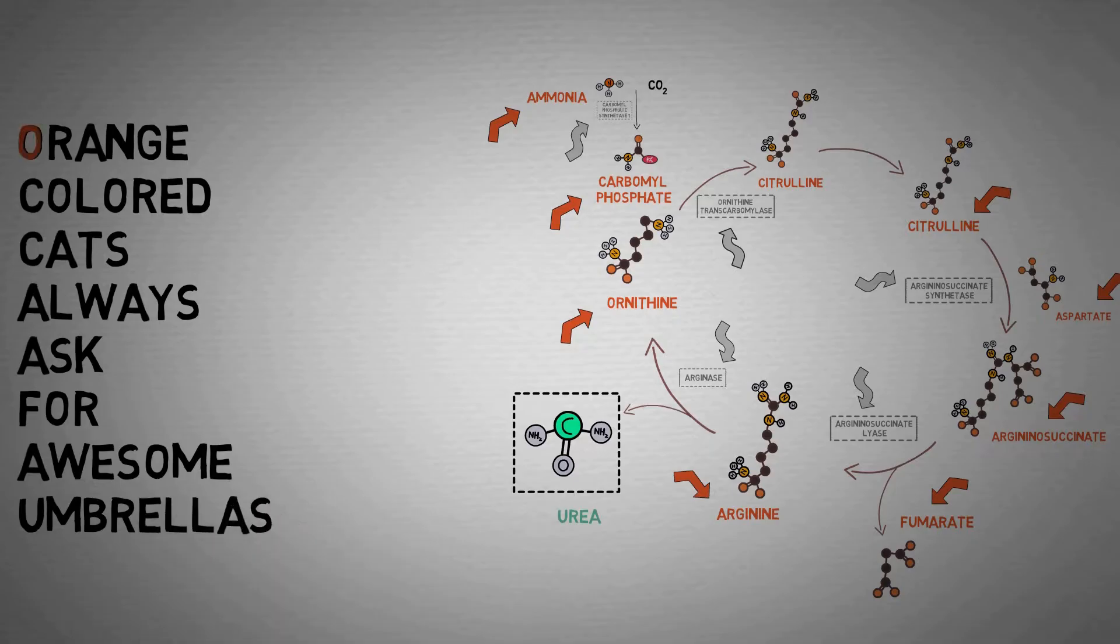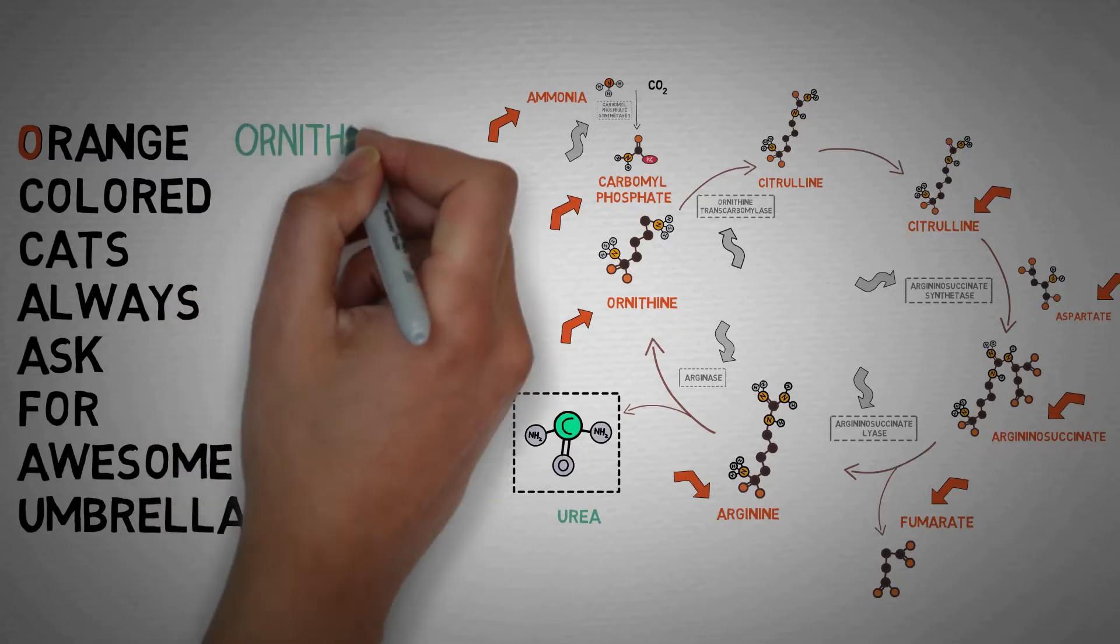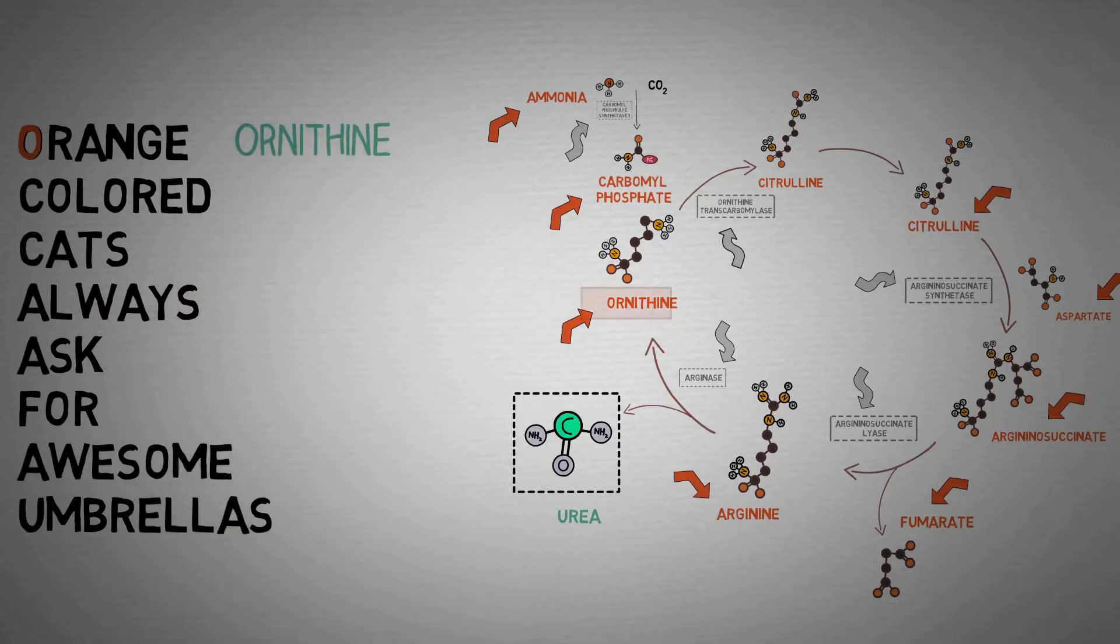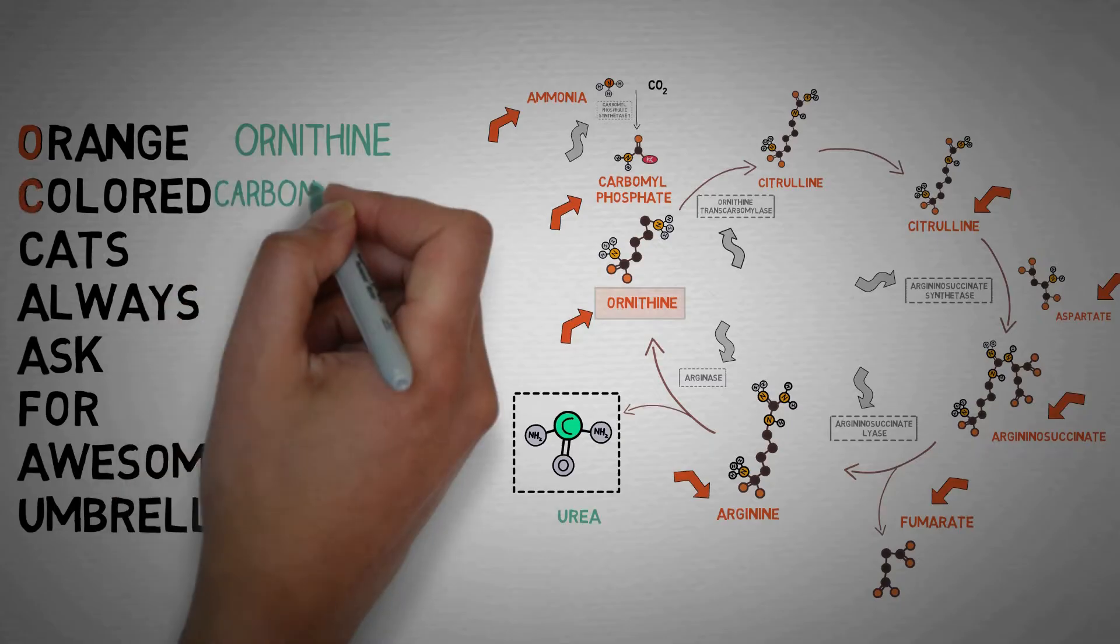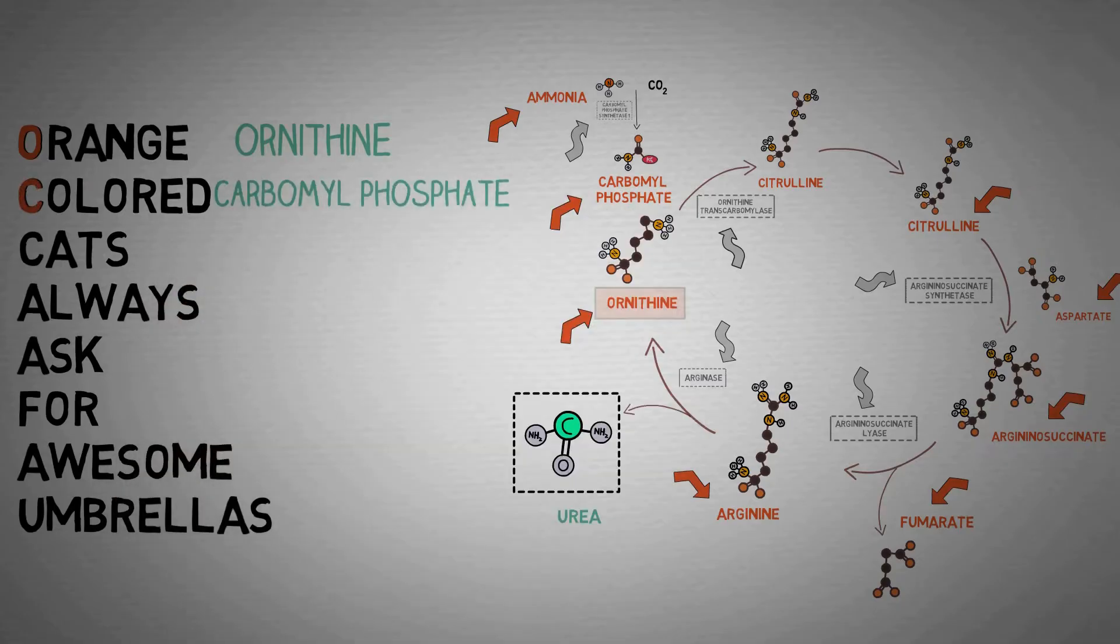In this mnemonic, the O in orange stands for ornithine, which is this molecule right here. The C in colored stands for carbonyl phosphate, which is this molecule here formed by the combination of ammonia with carbon dioxide.